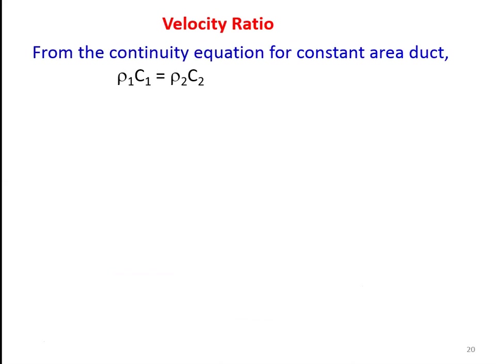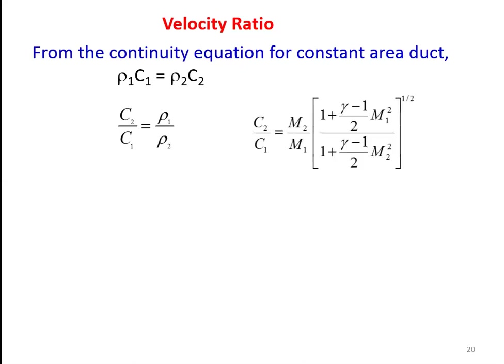The first property is velocity ratio. From the continuity equation for constant area duct, rho1 C1 = rho2 C2. Rearranging, C2/C1 = rho1/rho2, which is the density ratio. In the earlier lecture, we derived the density ratio. Substituting, C2/C1 = (M2/M1) × [( 1 + (γ−1)/2 × M1²) / (1 + (γ−1)/2 × M2²)]^(1/2).